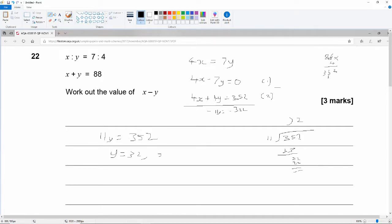Therefore, x is equal to 88 minus 32, because x plus y is equal to 88. And therefore x is equal to... 8 minus 2 is 6, 8 minus 3 is 5. So that's 56.